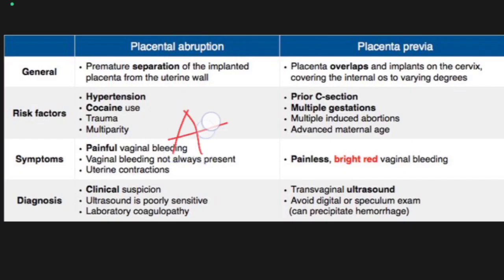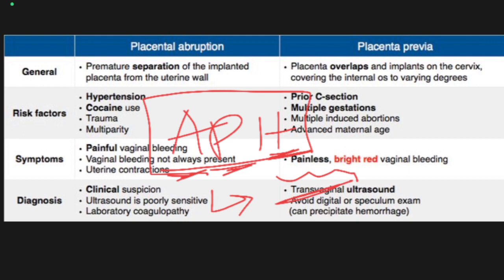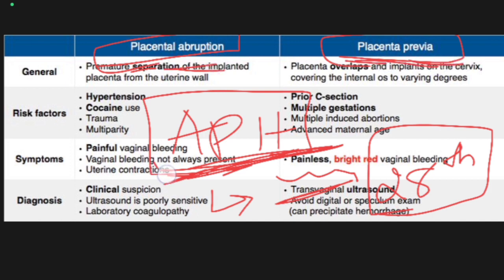APH — antepartum hemorrhage. Anti means before, partum means pregnancy, hemorrhage means bleeding including blood clots. Bleeding occurs from the genital/vaginal area before 28 weeks of pregnancy. If bleeding is observed in the middle of pregnancy it is considered APH. The two main types are placenta abruption and placenta previa.